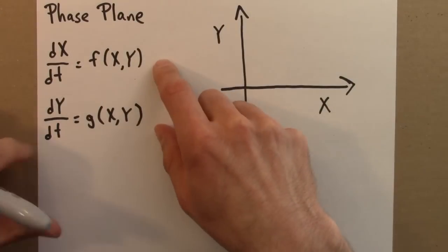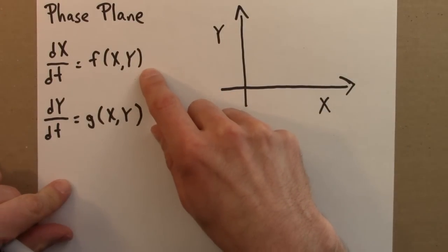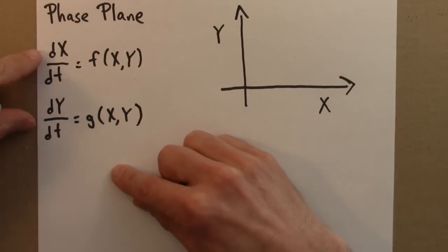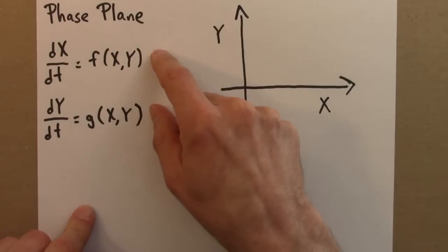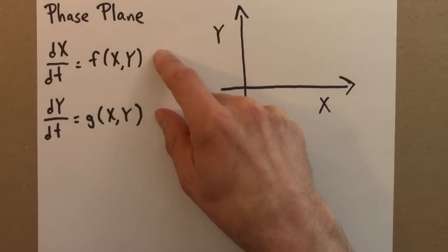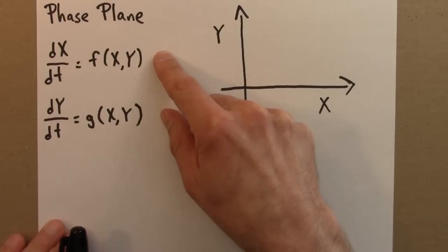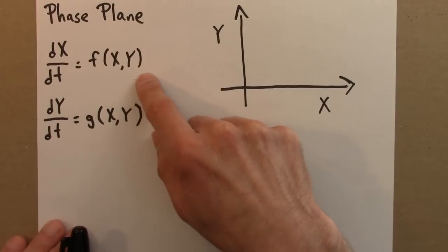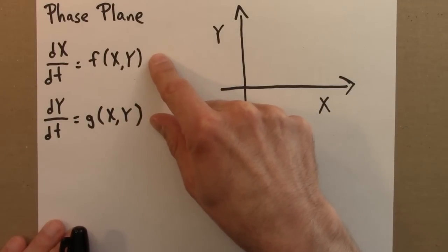To use the language we've used before, I would say that x and y determine the rate of change of x and y, and thus x and y themselves. As with all the dynamical systems we've looked at, this is a deterministic dynamical system. x and y determines the future, the present value of x and y determine the future values of x and y through this relationship.